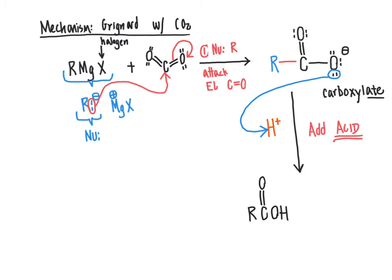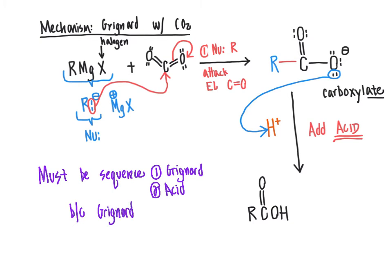The reaction absolutely has to be done sequentially with first bringing in the Grignard reagent and then adding the acid. This sequence has to be in place of first bringing in the Grignard reagent, and then secondly, adding the acid because Grignards will react with acids.